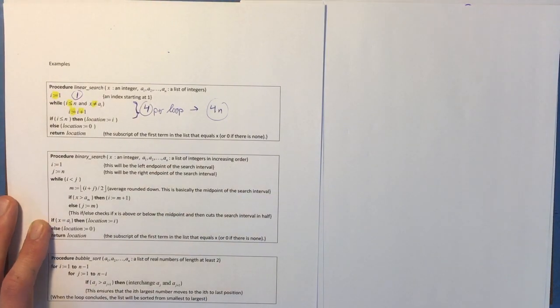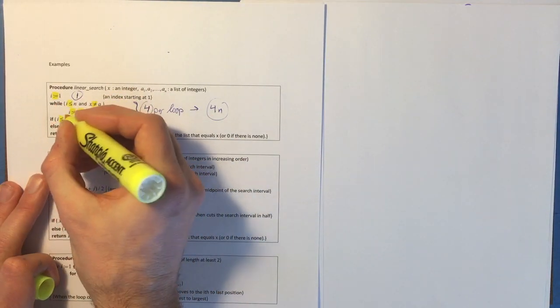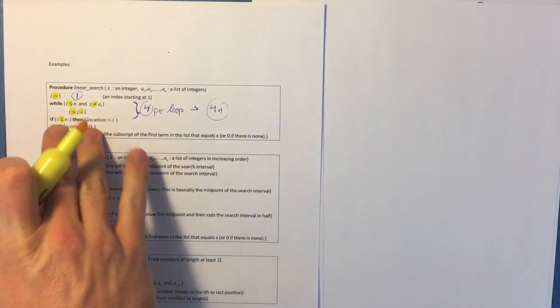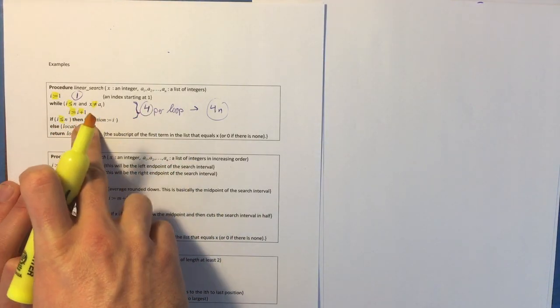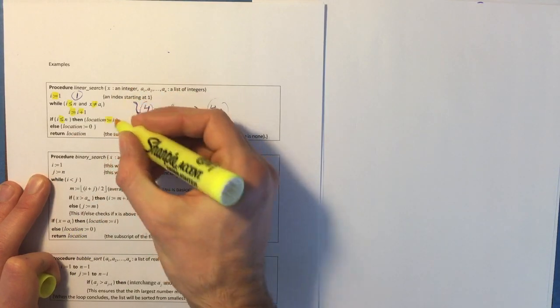Then after the loop ends, you have an if. So you have a comparison here if i is less than or equal to n. Now that if is going to spawn one of two statements. You're either going to do the then or the else, and each of these includes one assignment.